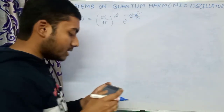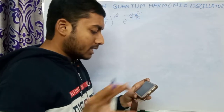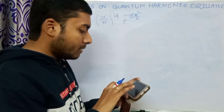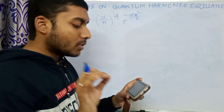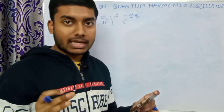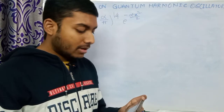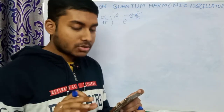Now it is asked — where all the things are defined — which one of the following is the probability of finding the particle outside the classically allowed region?